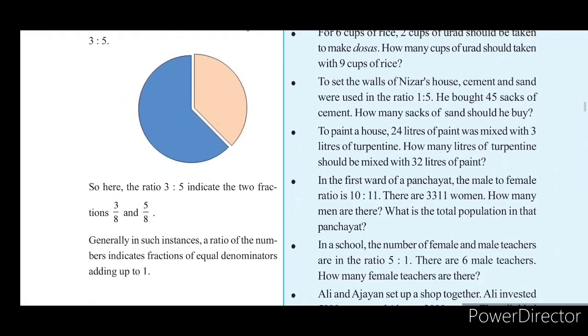In the first ward of the town, the male-to-female ratio is 10 to 11. There are 3,311 women. How many men are there? What is the total population?